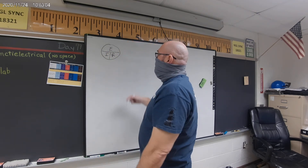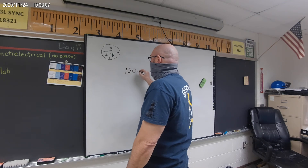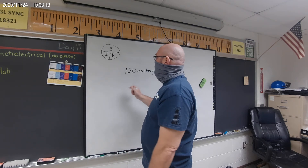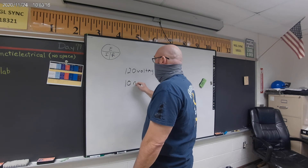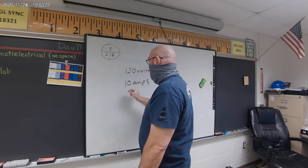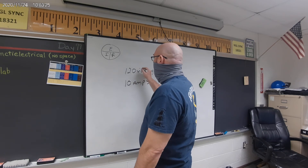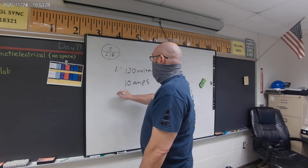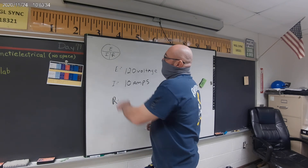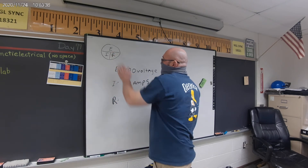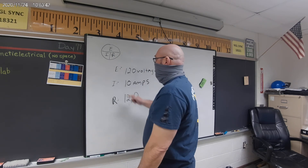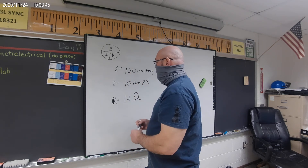So if I have a voltage of 120 volts, which is standard in residential wiring, and it is drawing 10 amps in the circuit — if I know two of the three things, I can find the third. I know E, I know I, so I'm trying to find R. If I'm trying to find R, it is E divided by I. So the resistance would be 12 ohms, because 120 divided by 10 is going to be 12.